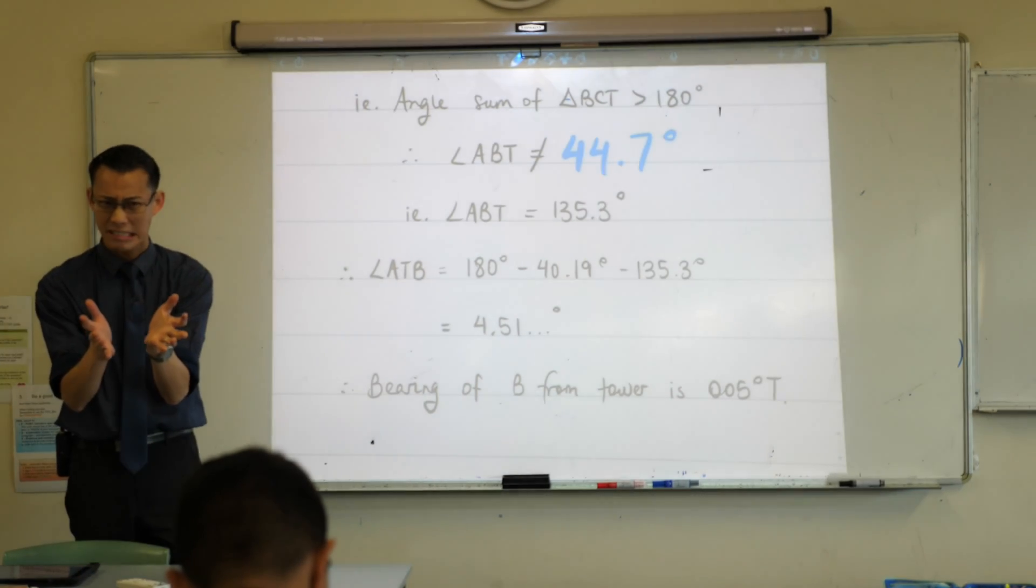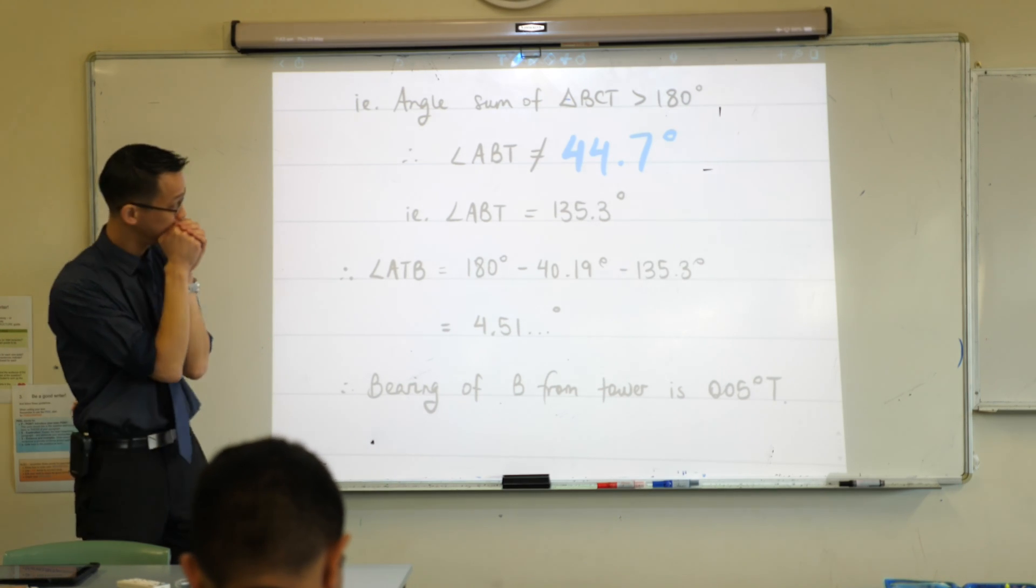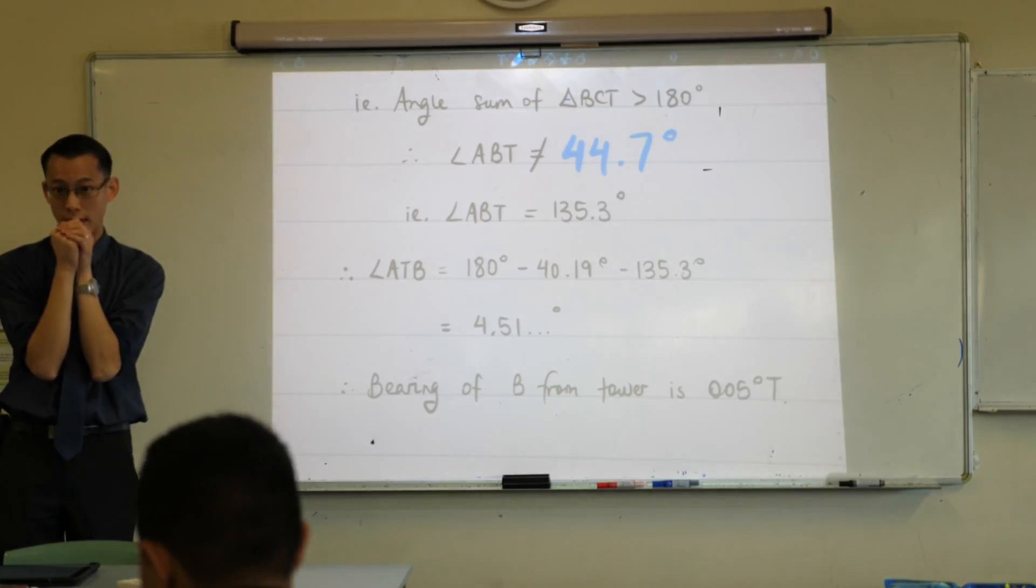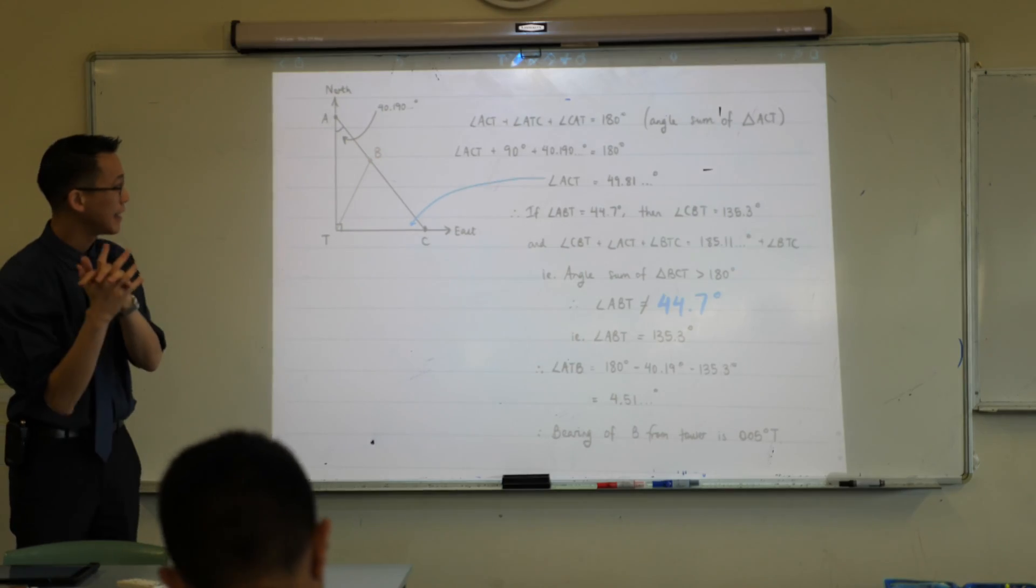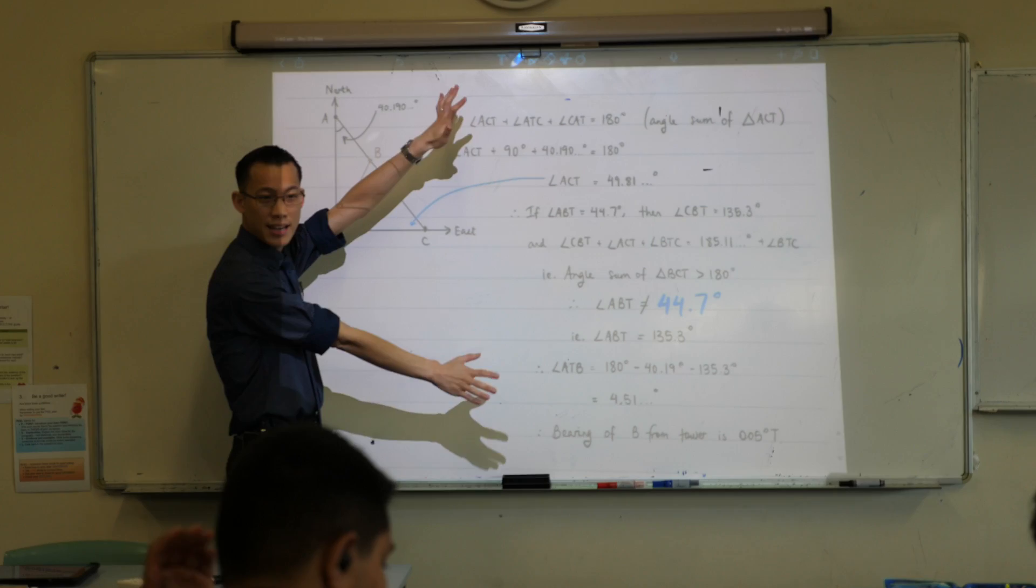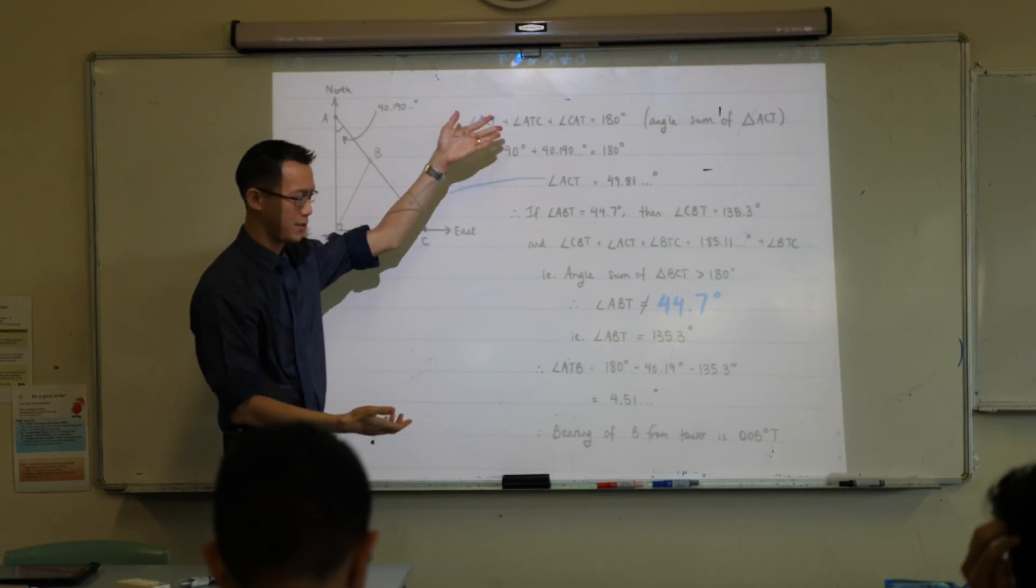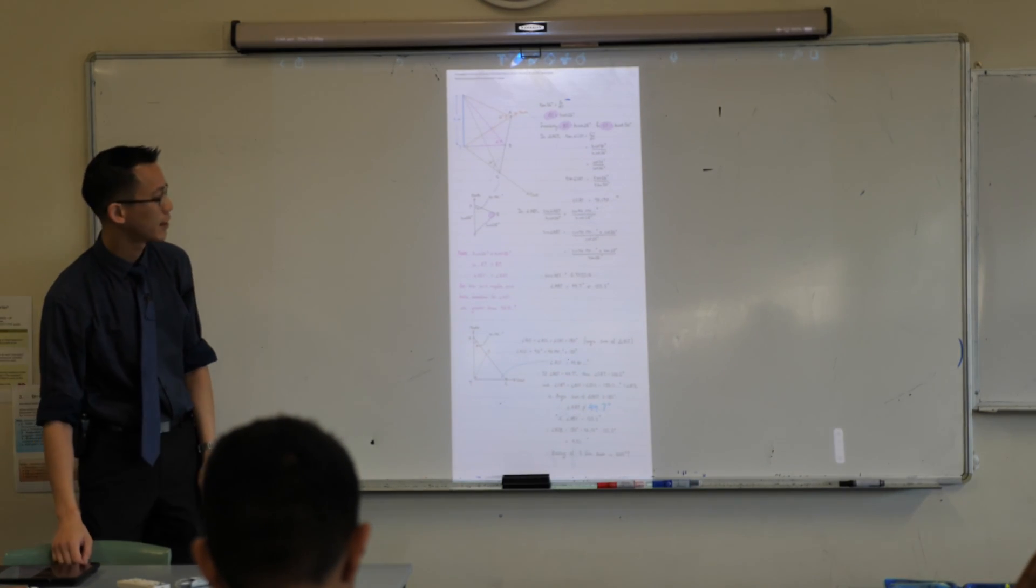Does that make sense? Does anyone have any questions on any part of that? Because I did go through that fairly quickly. Any parts that need a bit of clarification? As promised, I'll give you this on canvas so you don't have to worry about writing it down, but I wanted you to see the flow of my argument. Like, resolving this ambiguous case, that's a lot of work and a lot of thinking. So that's why it takes so much space. In fact, it's about half of my working is just dealing with that guy.